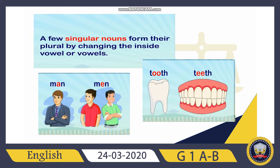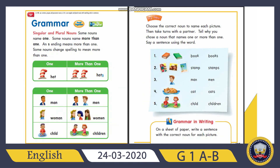Look at these pictures. You can see: one hat, two hats; one man, two men; one woman, two women; one child, two children. These are our irregular and regular plural forms.